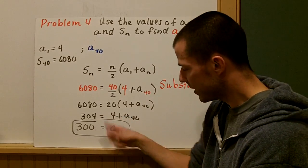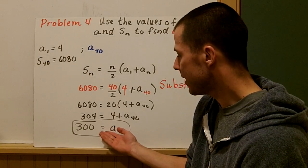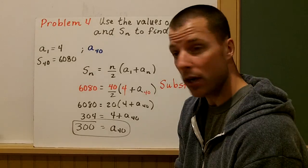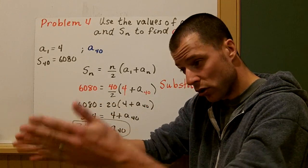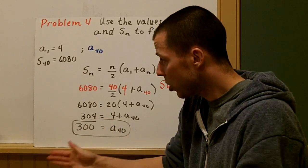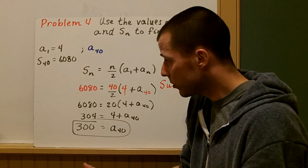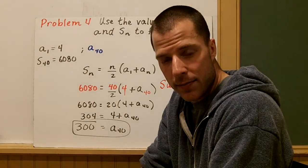Subtracting 4 from both sides, I get a_40 is 300. So what that tells me is that the last term is 300. We're going to start at 4, there's going to be 40 terms total. You start at 4 and you're ending at 300. And when you take that total sum of all those terms, all 40 terms, it's actually 6080.